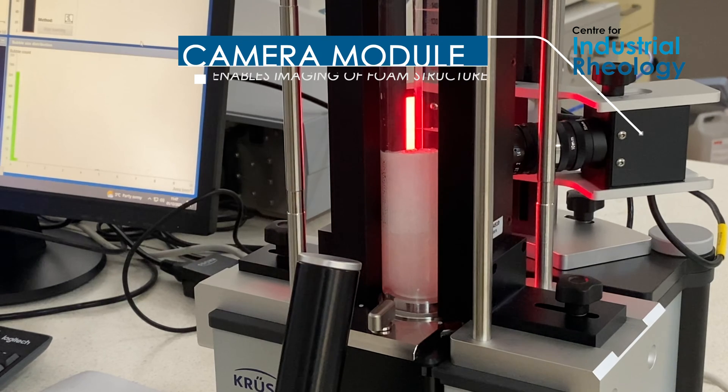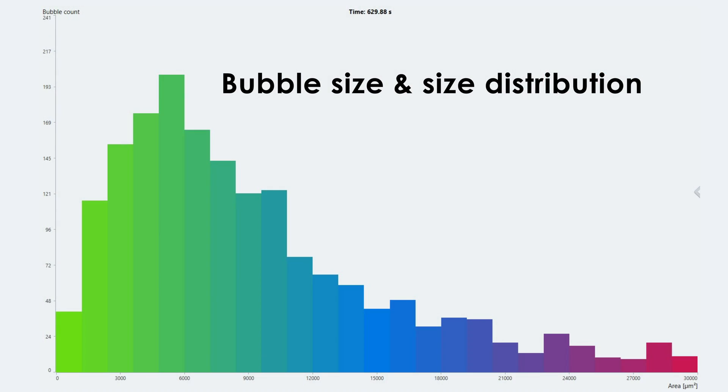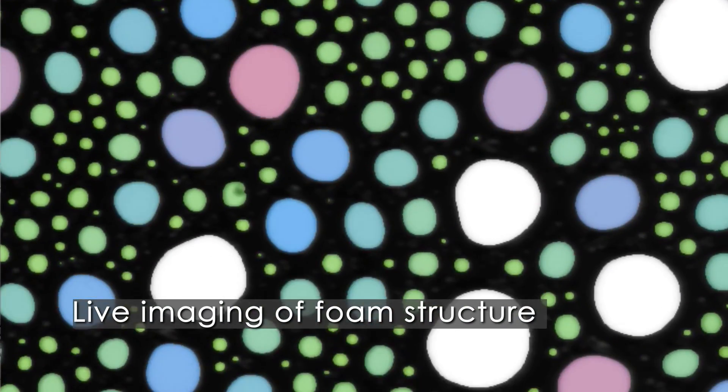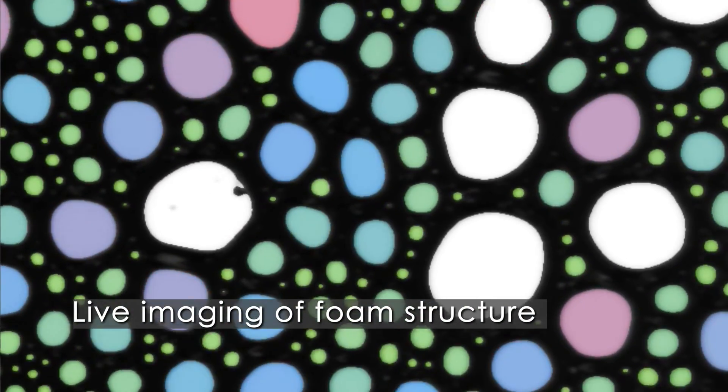That camera module can measure bubble size and bubble size distribution by analysing live images, time resolved, to see changes in real time.